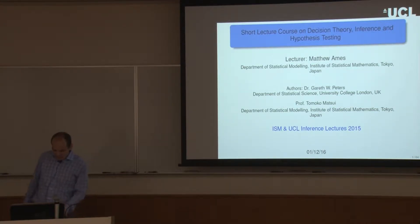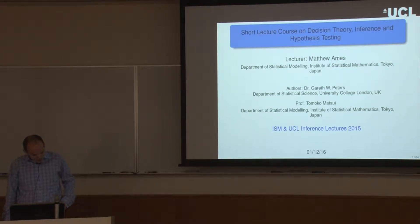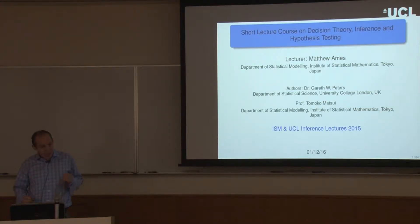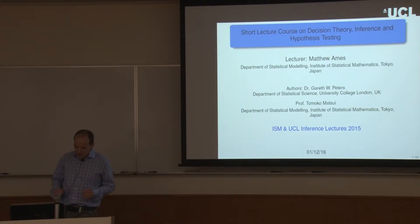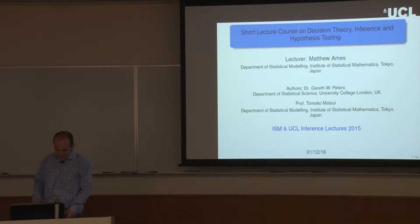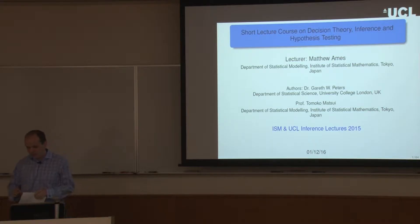For today, some points to keep in mind: a notion of a probability triple, which I'll introduce to begin with; some key concepts in statistical inference such as unbiased, efficient, and consistent estimators; and finally, the central limit theorem, which is key in statistics.